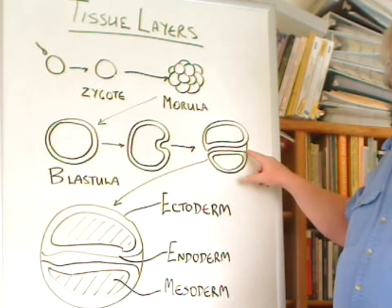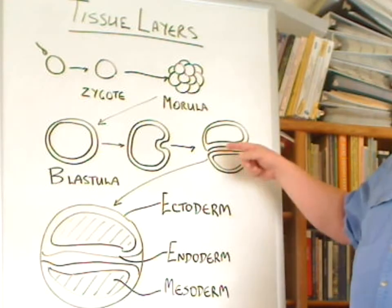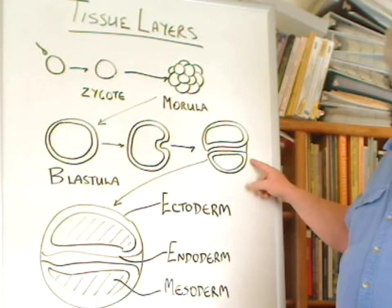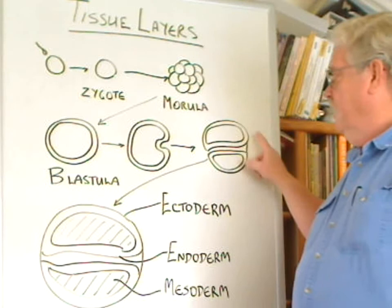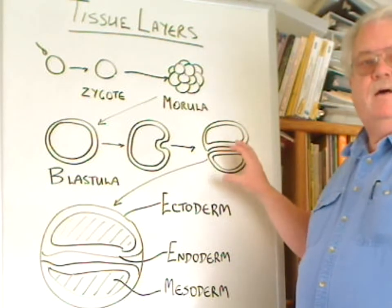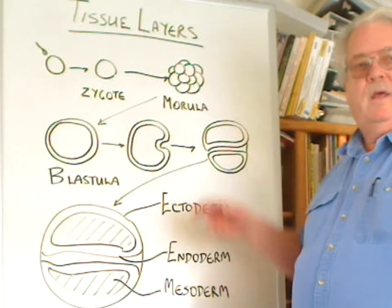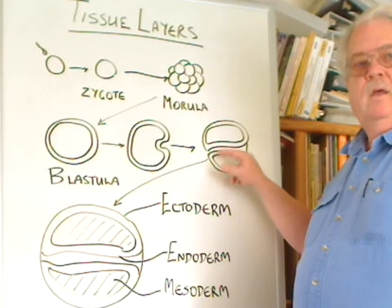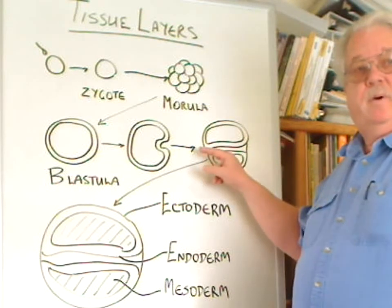This tube — a hollow tube running through the hollow ball — is actually the primitive gut. It will become the intestine and the digestive system. At this point we actually have two kinds of tissues: an outer tissue forming the outside of the ball, and an inner tissue forming the lining of this primitive gut.